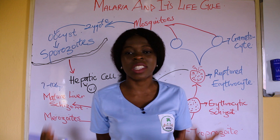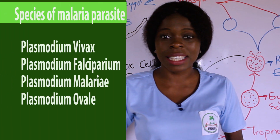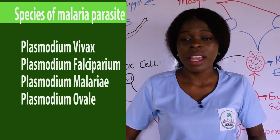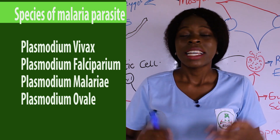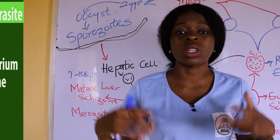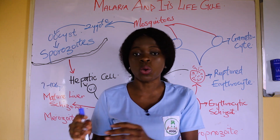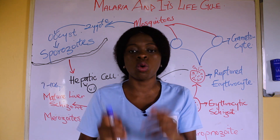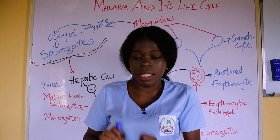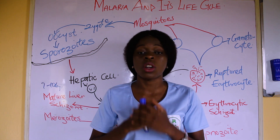There are different species of the malaria parasite. We have Plasmodium vivax, Plasmodium falciparum, Plasmodium malariae, and Plasmodium ovale. These are the four species of plasmodium that cause malaria. Take note: malaria is caused by a plasmodium parasite, and mosquitoes help to transfer or transmit this plasmodium from an infected host to a non-infected host.